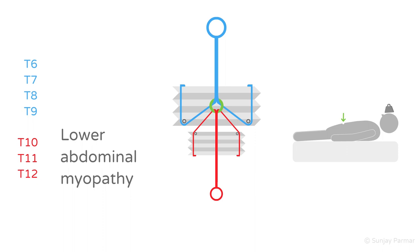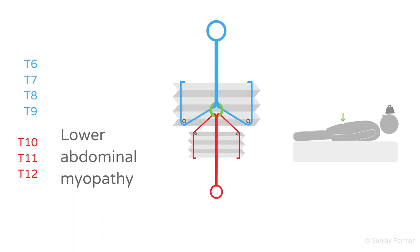Note that Beevor's sign only tells you that there is lower rectus abdominis weakness, but not whether it is due to a spinal cord, nerve root, or muscle problem. The rest of the neurological examination will help with this.